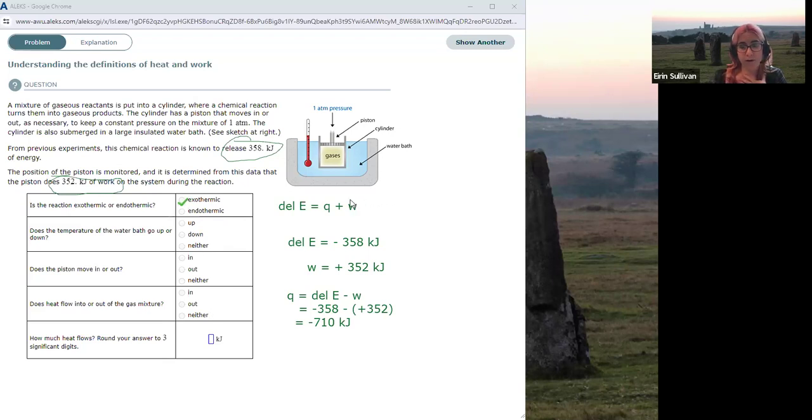The water bath is part of the surroundings. So if our reaction is releasing heat, that heat is going into the surroundings and warming them up. So Q for the surroundings, for the water bath, would be positive.